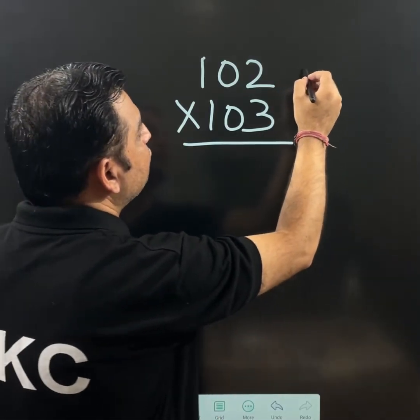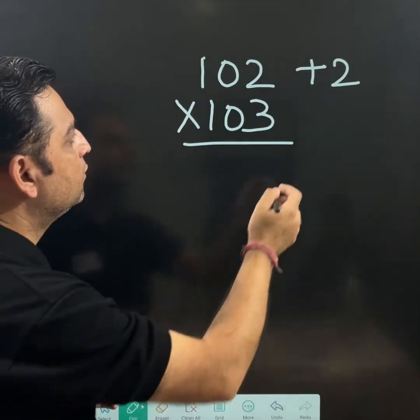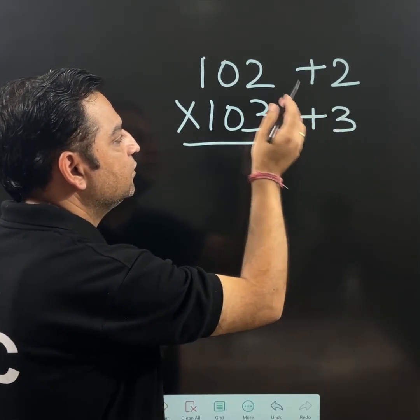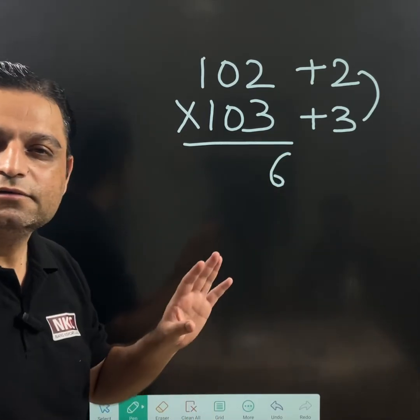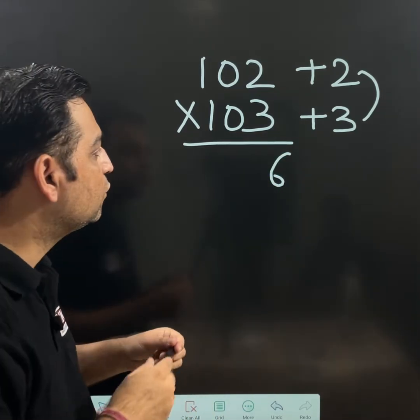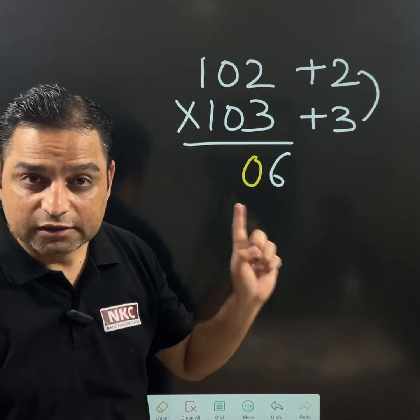Now, 102. Obviously, 100 plus 2 gives me 102. 100 plus 3 gives me 103. And when you will multiply 3 and 2, you will get 6. Right? But please do not write only 6. We will write 06. This is the main step where a little change is there.